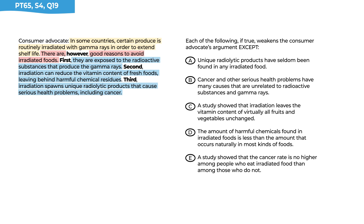This is an 'accept' question — four answer choices weaken the consumer advocate's argument, and the one that doesn't is the correct answer. Accept questions are more common in weaken, strengthen, and paradox questions because there are many ways to impact these arguments. Answer choice A says unique radiolytic products have seldom been found in any irradiated food. We have the cause present — irradiated food — but not the effect — radiolytic products. That's cause without effect. This weakens the argument, so eliminate A.